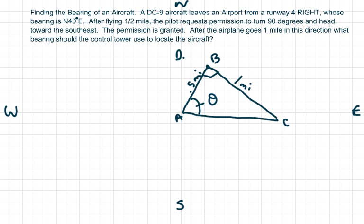Hi everyone, we're going to talk about another bearing of an aircraft problem. They give us the bearing and we want to know what bearing should the control tower use to locate the aircraft after he turns 90 degrees and heads towards the southeast.